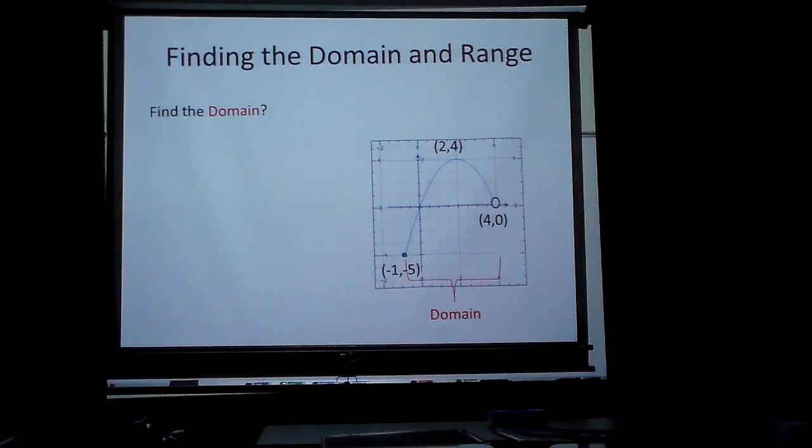As you can see right there, it shows it in red. It can equal negative 1 but cannot equal 4. Domain is x, so I'm going to write it like the following.